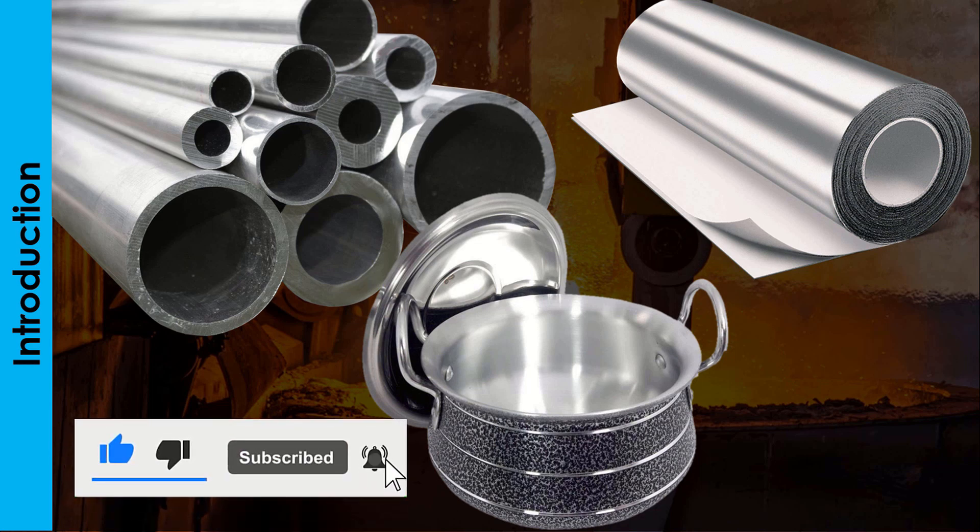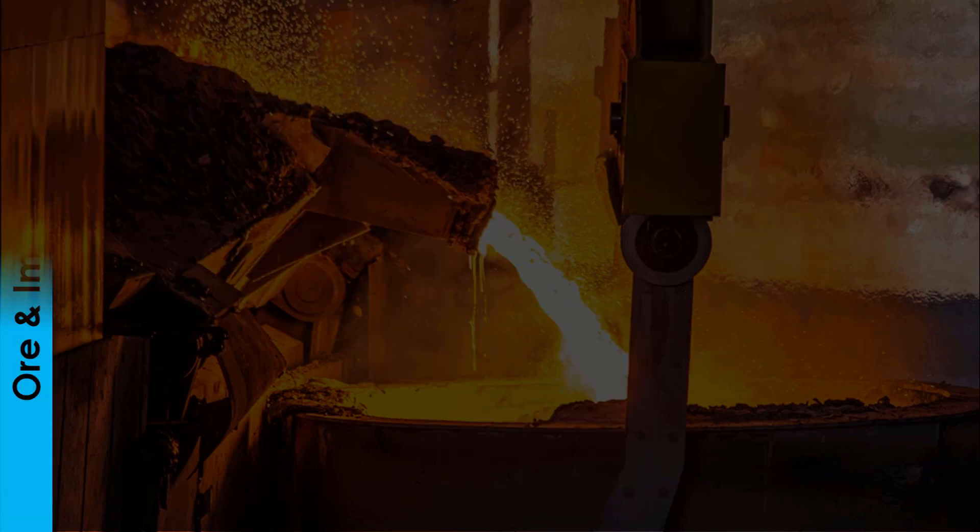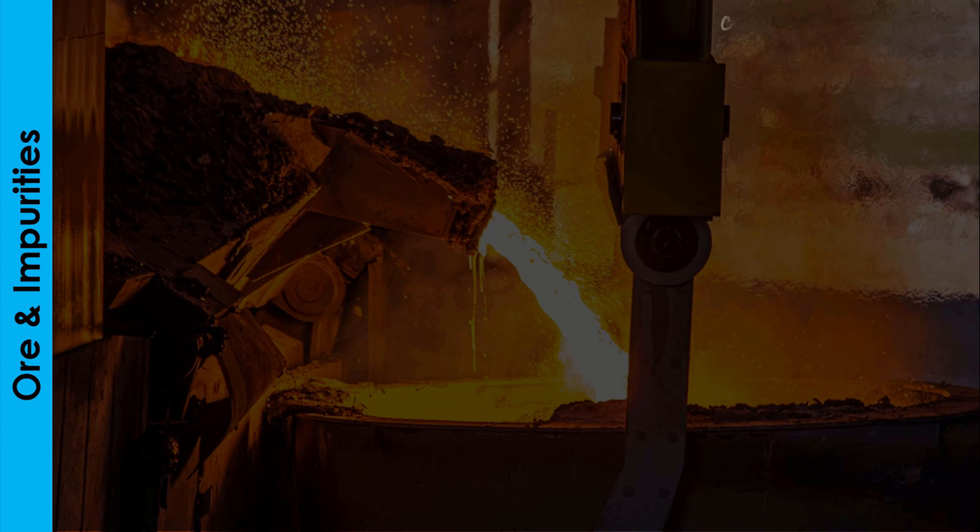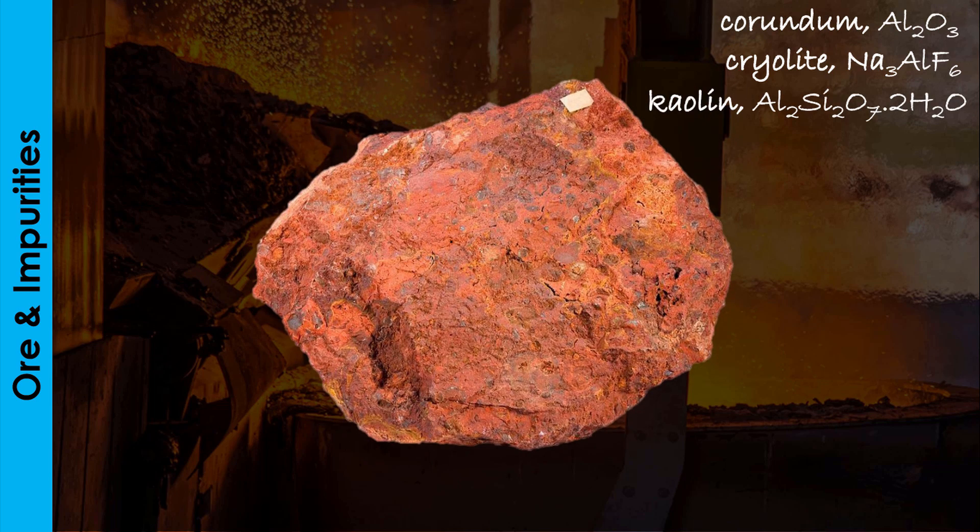To put aluminum into any form of usage, it must first be extracted or isolated from its ores. Though aluminum has other ores from which it can be extracted, the most commonly used is bauxite. Bauxite is preferred to other ores due to its low silica content.